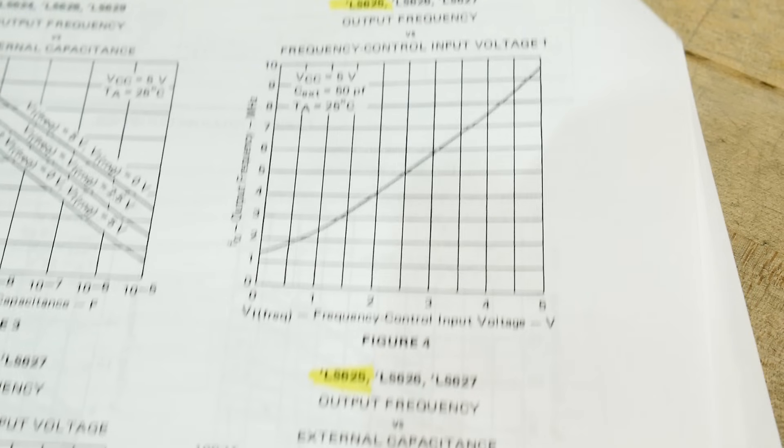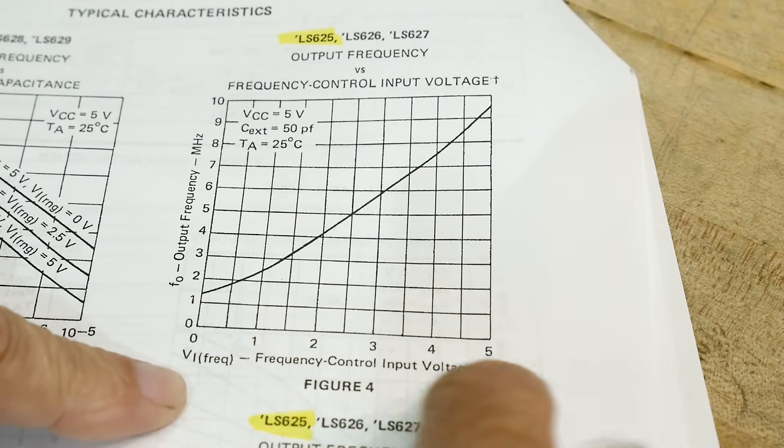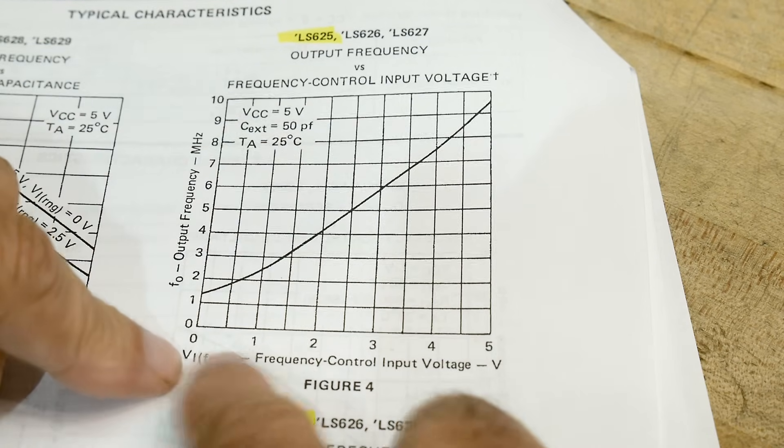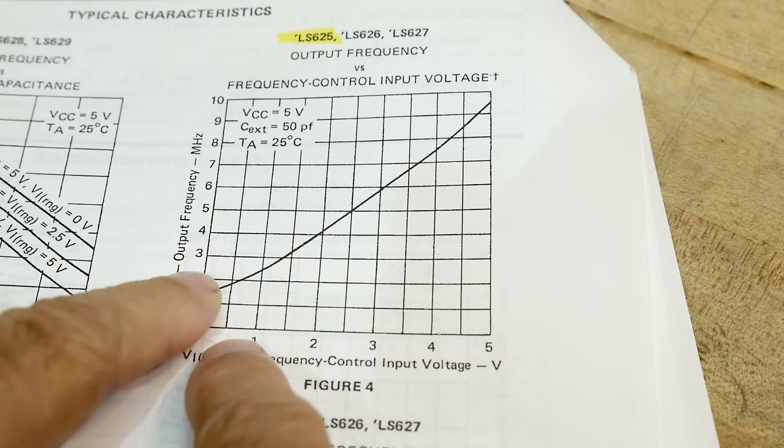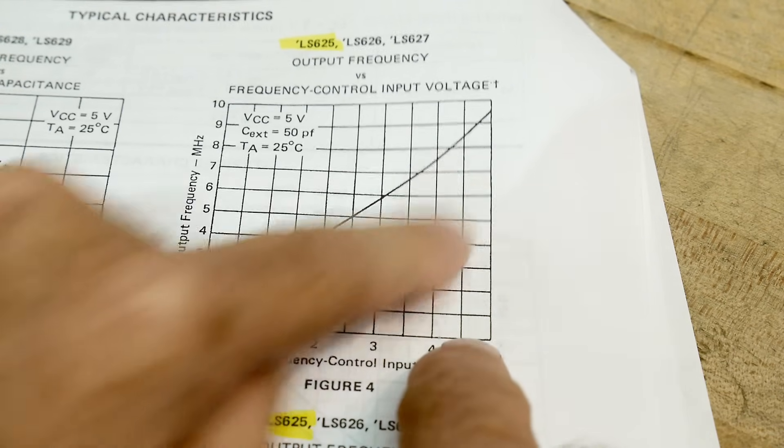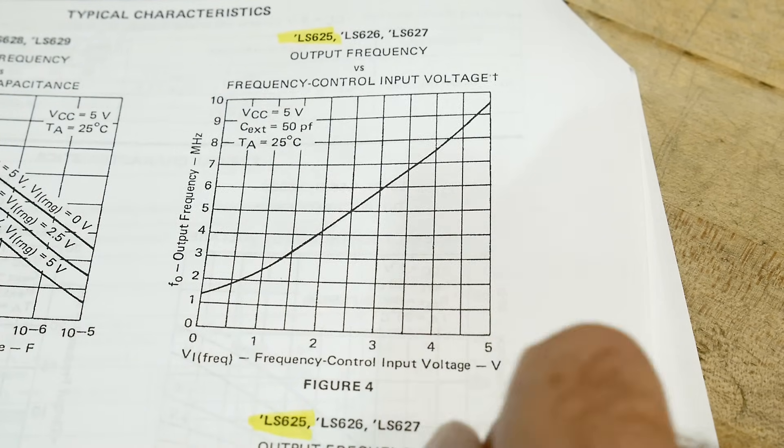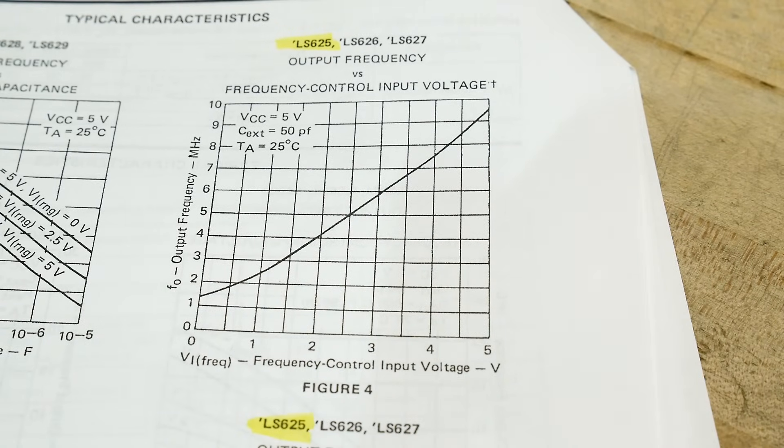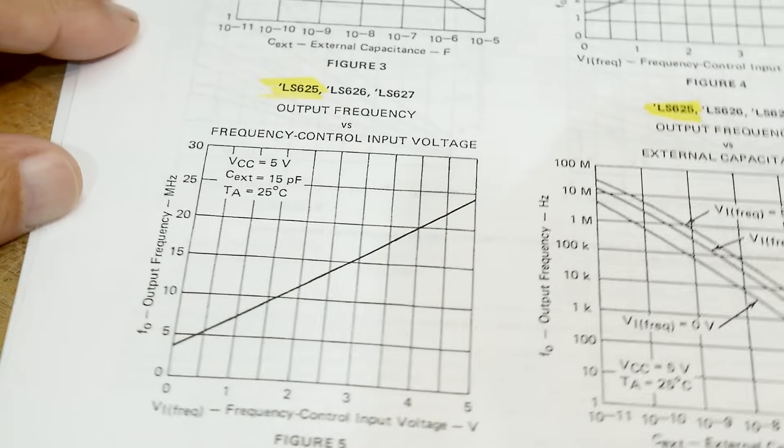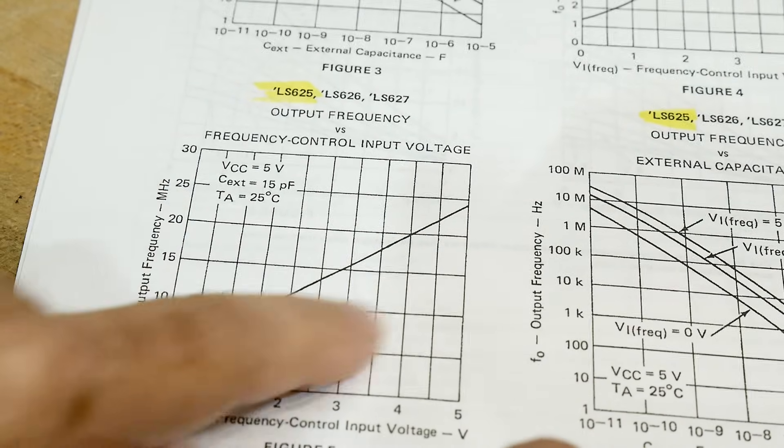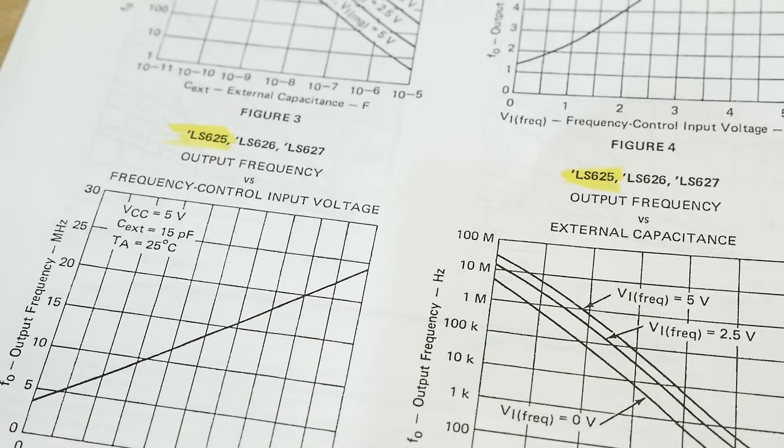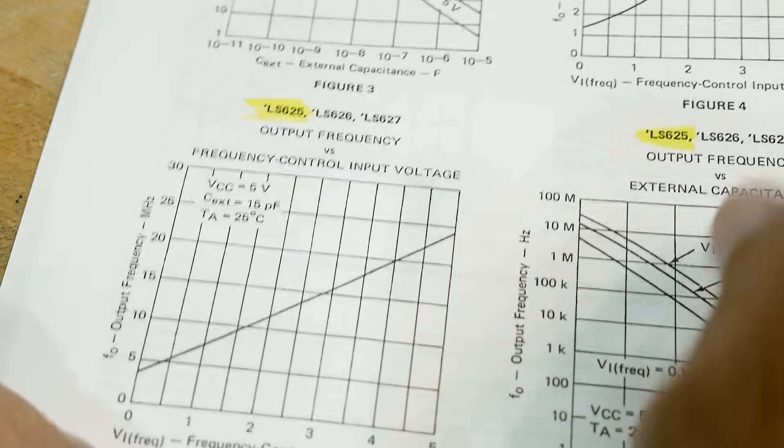So let's take a look at the graph here. So this is the control voltage. Okay. They have a 50 picofarad capacitor, and then this is the control voltage. So at one volt, you're getting about two and a half megahertz and at five volts, you're getting about nine and a half megahertz. So that is the range and it's not exactly linear, but pretty close. Let's see, here's another graph. This one's at 15 picofarads, since it can go up to, oh, it can go up to 20 megahertz. So from about four megahertz to 24 megahertz. Well, that's pretty cool.